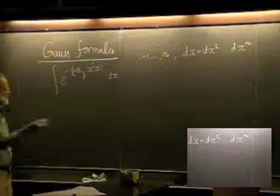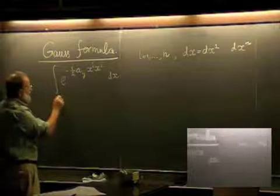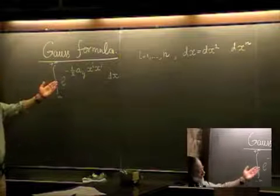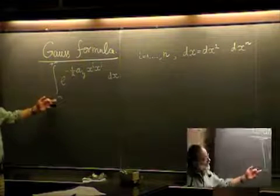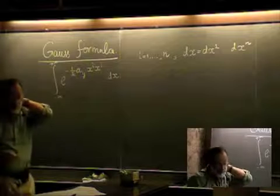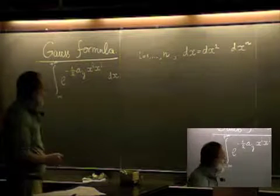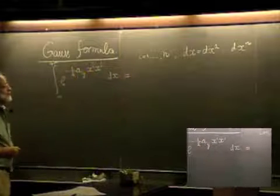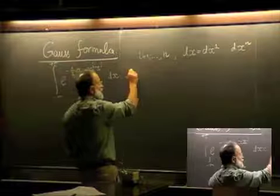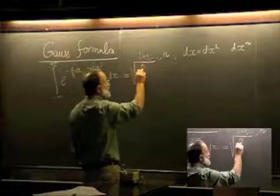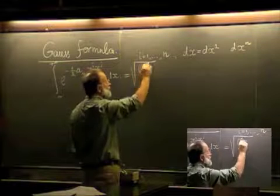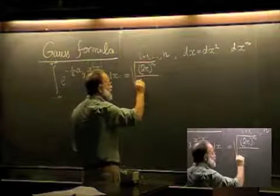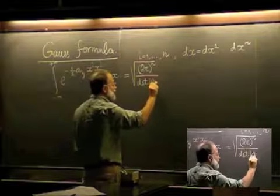This integration is over the entire space, integrating n times from minus infinity to plus infinity. This integral is computed exactly, and the result is the square root of (2π)^n divided by the determinant of the matrix a_ij.